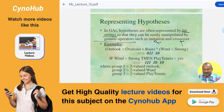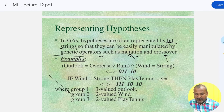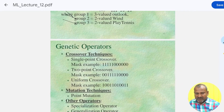For example, outlook equal to overcast versus rain, and wind equal to strong, is represented as 0 1 1 and 1 0 and 1 0. If wind equals strong then play tennis — yes — is represented as 1 1 1 and 1 0 and 1 0. We group these: group 1 belongs to three-valued outputs, group 2 to two-valued wind, and group 3 to two-valued play tennis.